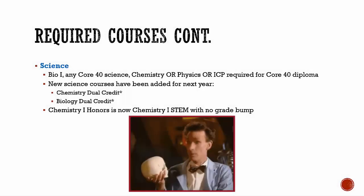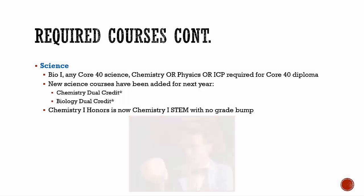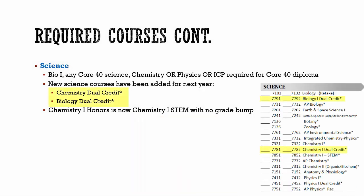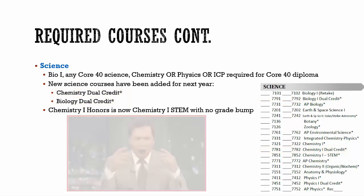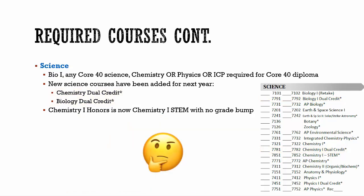The last required course is science. New science courses for next year include chemistry dual credit and biology dual credit. You will notice in the science section of your course description guide that we no longer have chemistry one honors. If you are not planning to major in a science field in college, the dual credit option may be good for you. Students who do want to major in a science field in college might want to consider taking AP or STEM science classes.